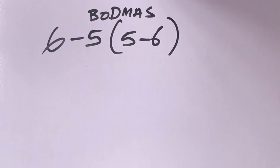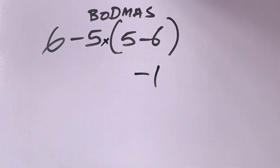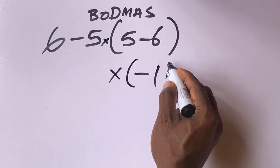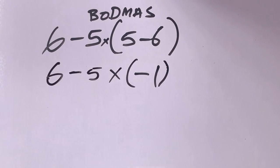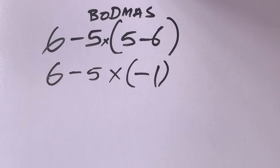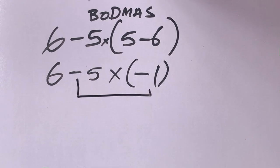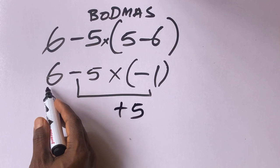5 minus 6 will give us minus 1. Remember there is an invisible multiplication here, so here it will be times — let's put this in brackets: (5 minus 6). According to order of operations, multiplication comes before subtraction, so let's multiply first: minus 5 times minus 1 will give us plus 5, plus 6, minus 1.